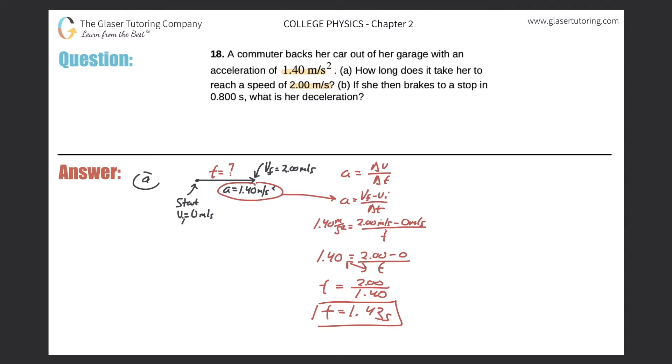And it works out to be 1.43 seconds. Great. So that is the time it took her to back out of her driveway and reach a final velocity of 2 meters per second.